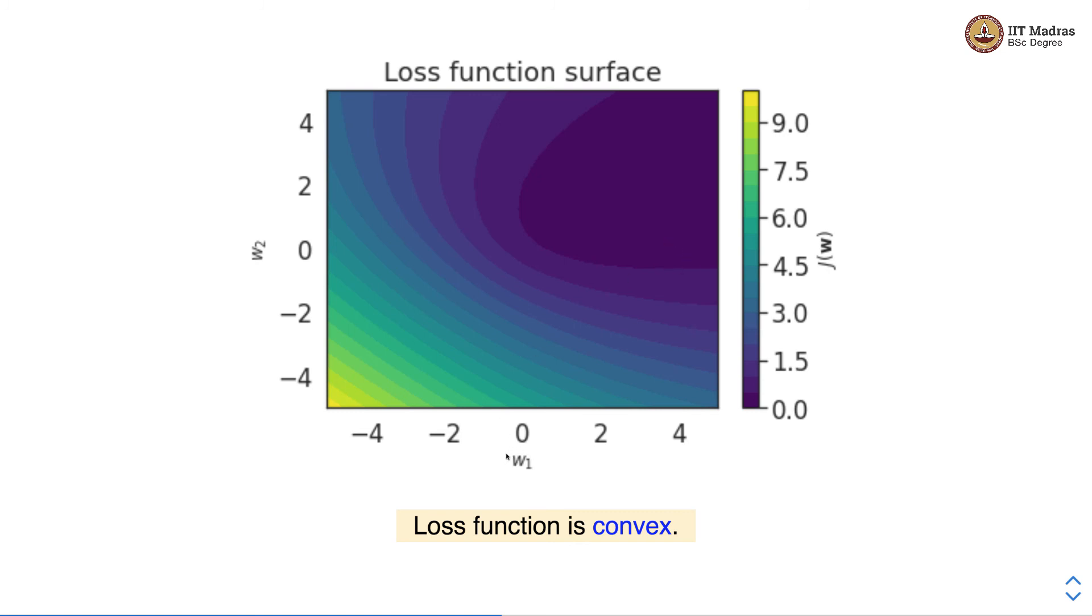We have shown this particular loss with two features and there are weights corresponding to those two features which is w1 and w2 and what you see is the contour of the loss surface. This is the color coding of the loss values. The darker color represents lower loss and as the colors become fainter the loss increases.